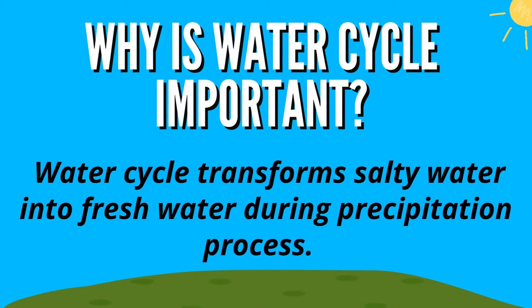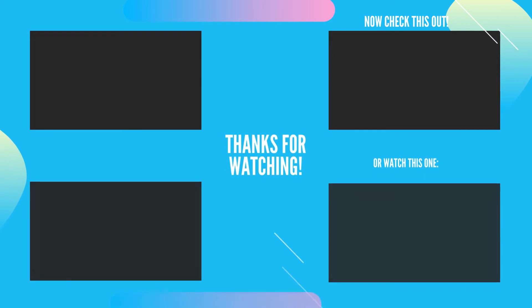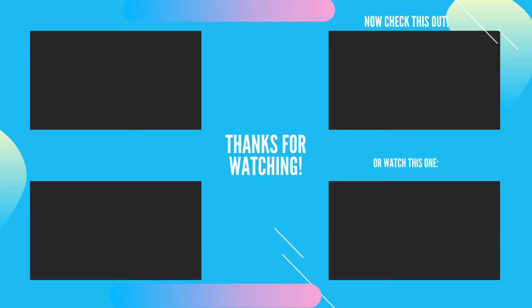So what is the importance of the water cycle? The water cycle transforms salty water into fresh water during the precipitation process. Thank you so much for watching.